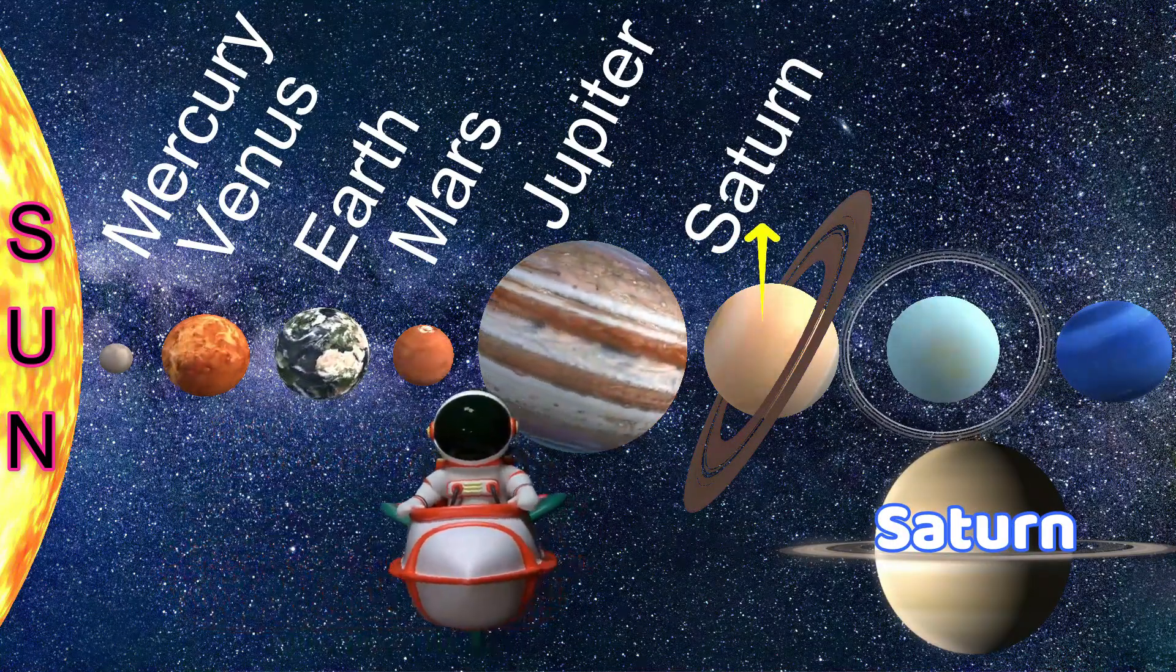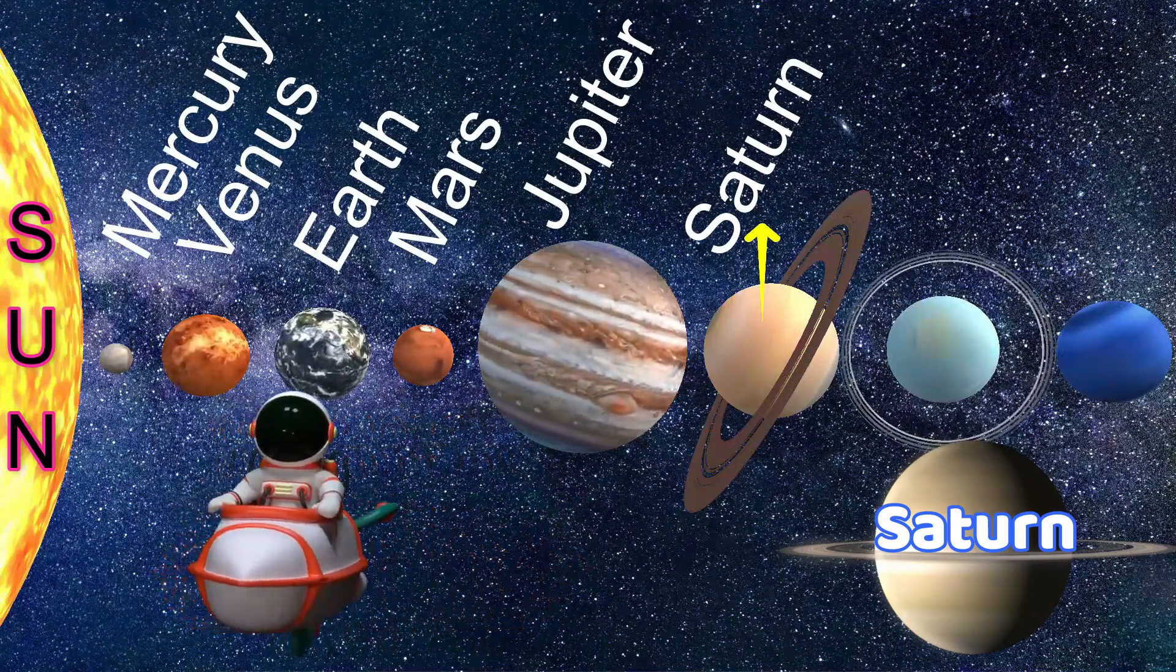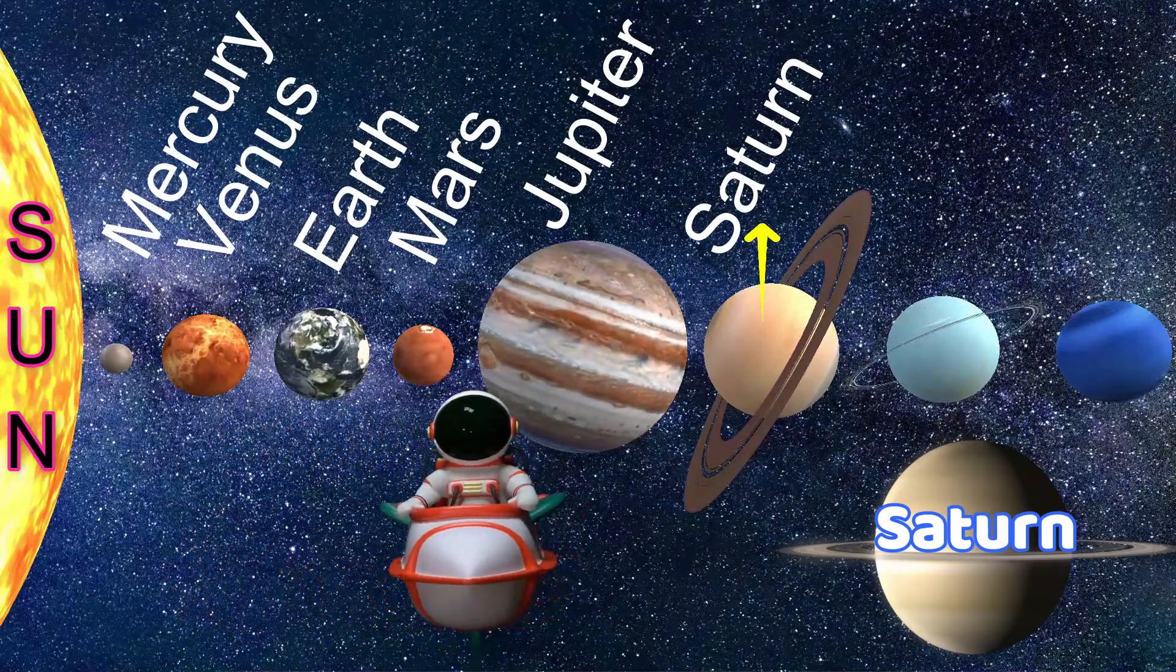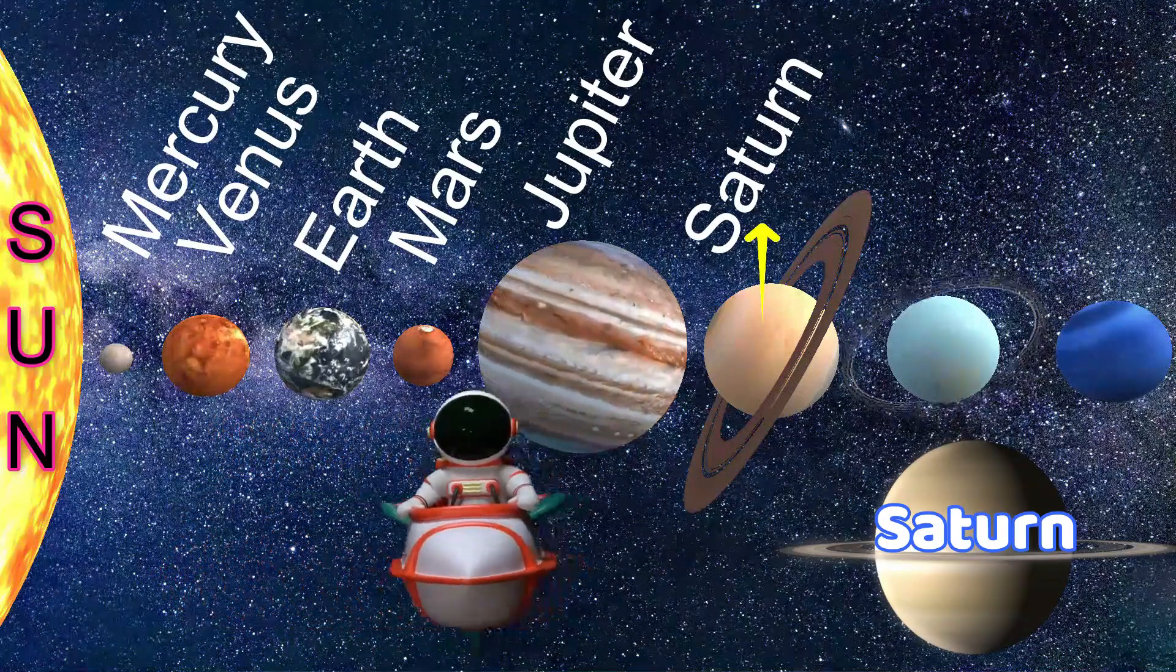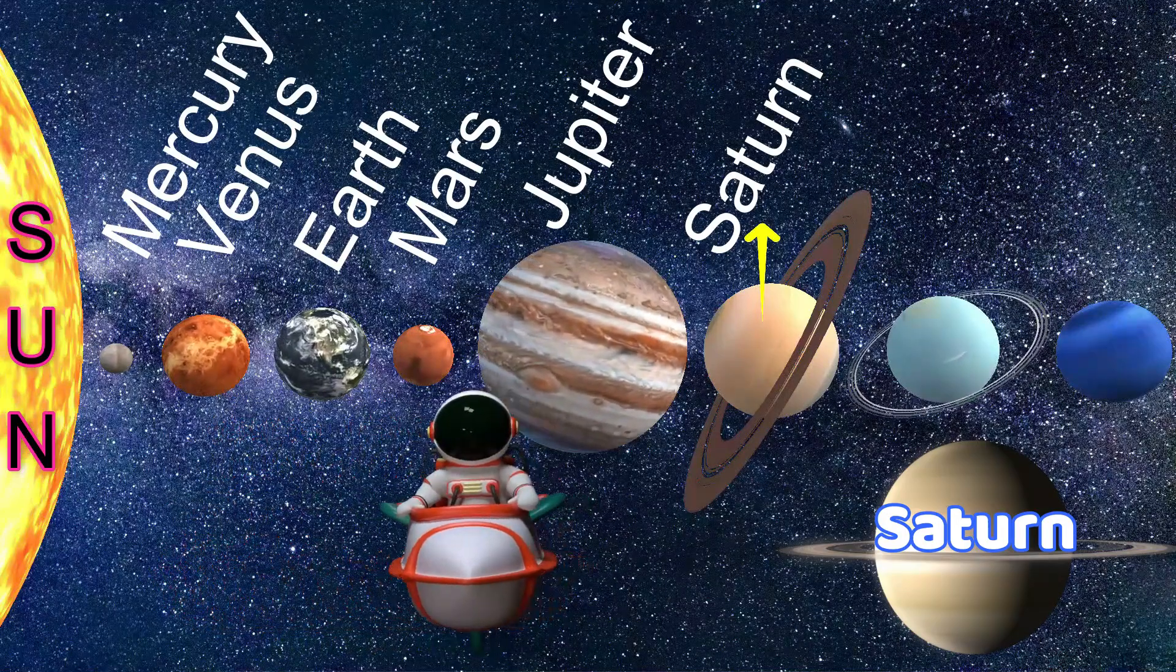Next planet, Saturn, second largest planet in the solar system. Saturn can float on water because it has less density than water. And has 82 moons. Titan is the largest among them.